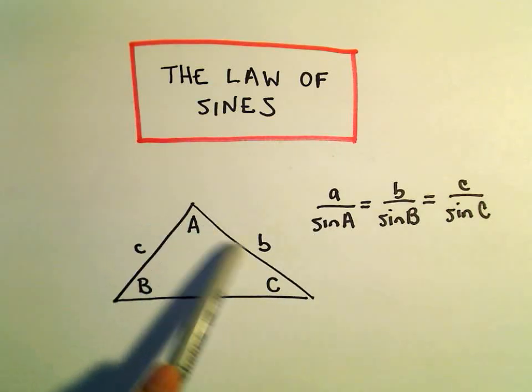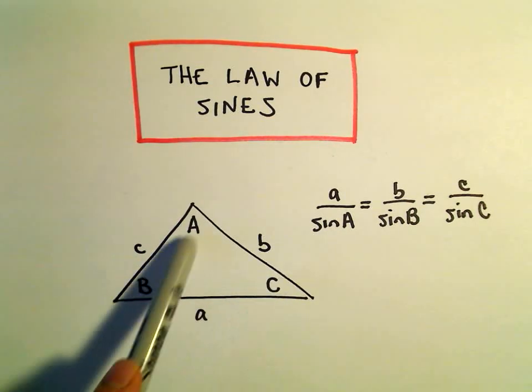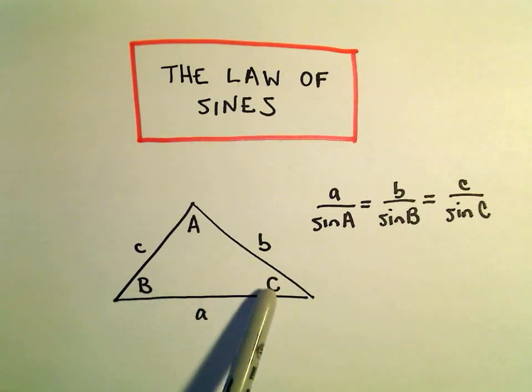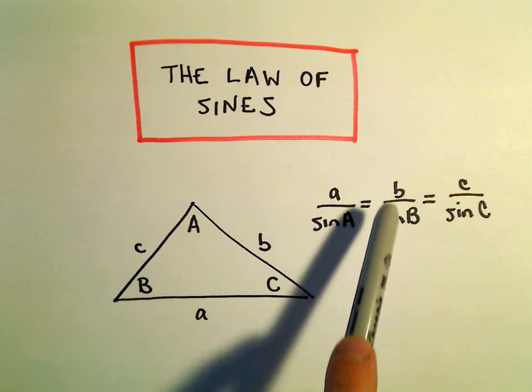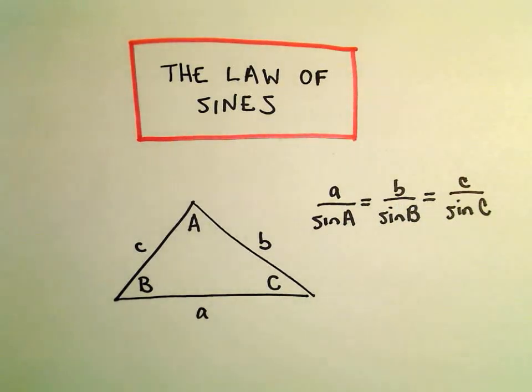So little a, little b, little c, those will be the side lengths a, b, and c. Capital A, B, and C are the angles. So we get a over sine A equals b over sine B equals c over sine C.